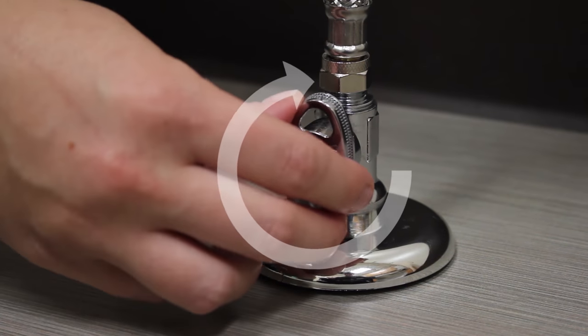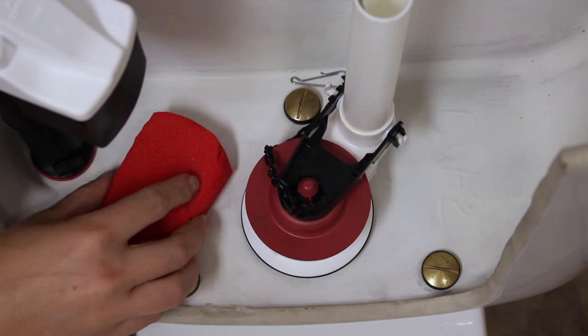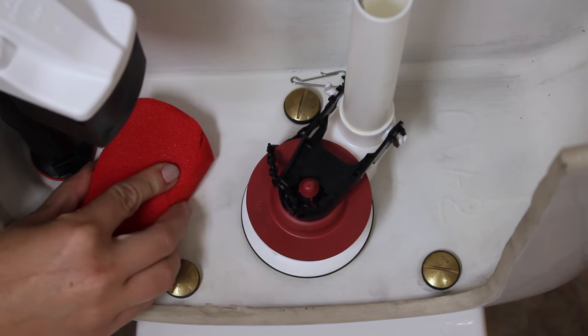The first step is to shut off the water supply to your toilet. Then flush and hold the lever down to drain the water from your tank. Sponge out the remaining water from your toilet tank.